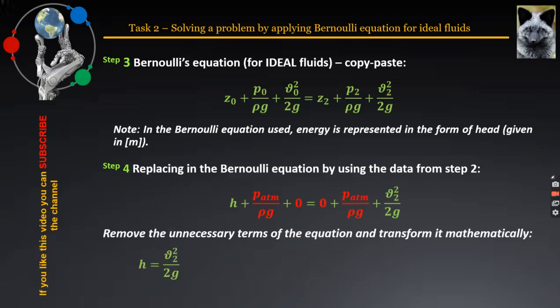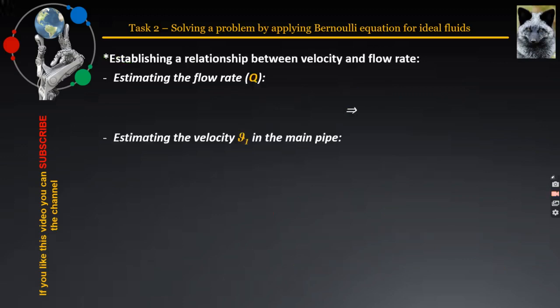The solution must be accomplished with respect to the unknown parameter — in this case, the velocity V2. After numerical substitution, the unknown velocity is calculated. The velocity at the outlet of the nozzle will be V2 equal to 10.85 meters per second. It is now possible to implement step 1, which was initially skipped, as demonstrated on the next slide.